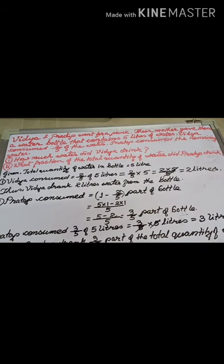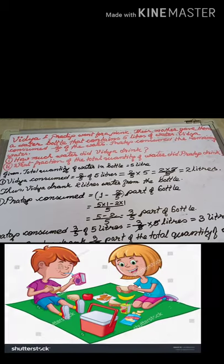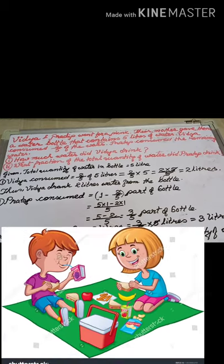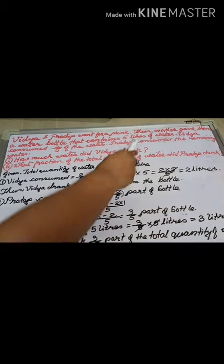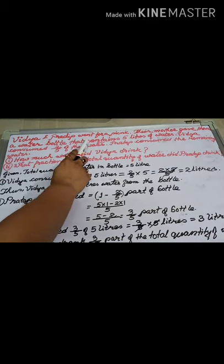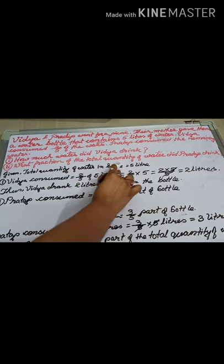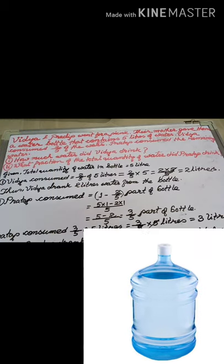Today we will do some word problems based on the concept of multiplication. The question is: Vidya and Pradeep went for a picnic. Their mother gave them a water bottle that contains 5 litres of water. That means the total quantity of water in the bottle is 5 litres.